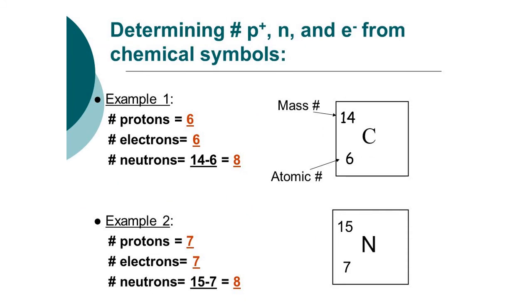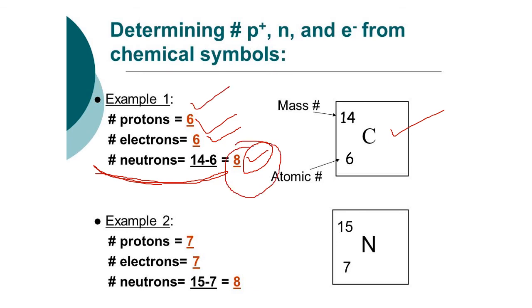For example, carbon contains 6 protons and 6 electrons. If the mass number is 14, neutrons equal 14 minus 6 equals 8 neutrons. For nitrogen, the atomic number is 7 — meaning 7 protons — and the mass number is 15, so neutrons equal 15 minus 7 equals 8 neutrons. This is how we determine the chemical symbols, atomic number, and atomic mass for elements.